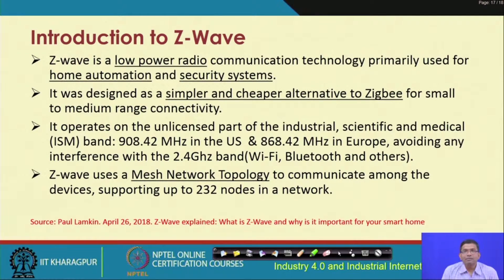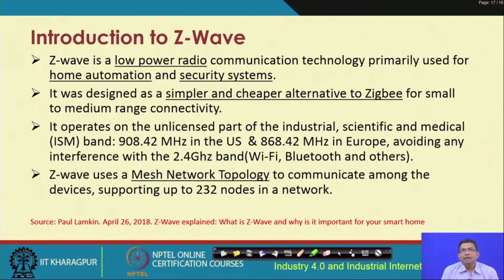Z-Wave serves a similar purpose to ZigBee, but for small and medium range connectivity requirements it offers simpler and cheaper alternatives. It operates in the ISM band — specifically 908.42 MHz in the US and 868.42 MHz in Europe — and it avoids interference with the 2.4 GHz band used by Wi-Fi, Bluetooth, and other protocols.